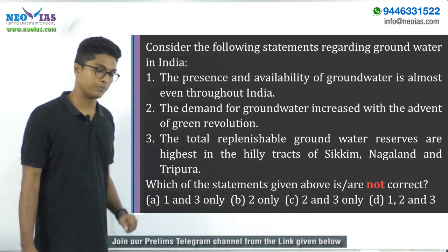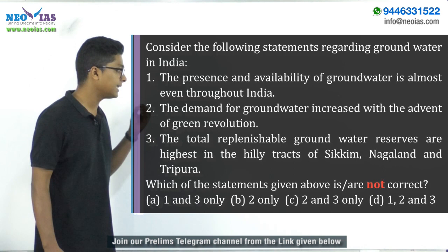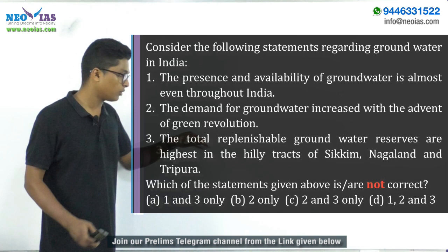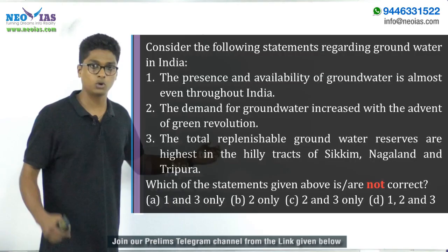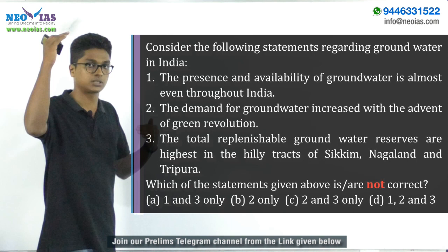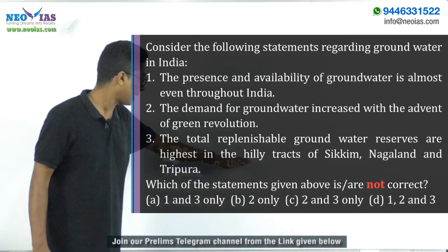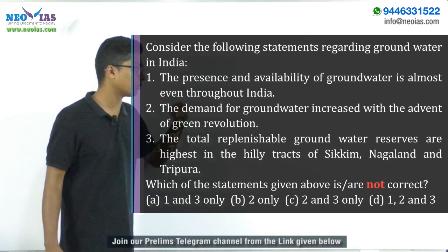Statement 3 says: 'The total replenishable groundwater reserves are highest in the hilly tracts of Sikkim, Nagaland, and Tripura.' In hilly regions, groundwater won't get replenished because surface runoff moves at high velocity due to slope, so water doesn't penetrate deep underground. Therefore, this statement is also wrong — replenishable groundwater reserves are not highest in hilly tracts; they would be highest in the northern plains or valleys.